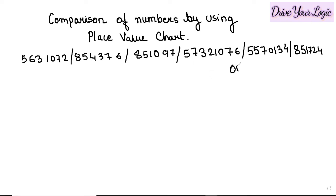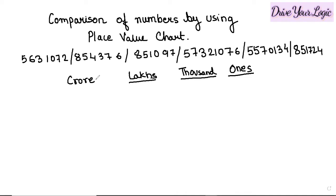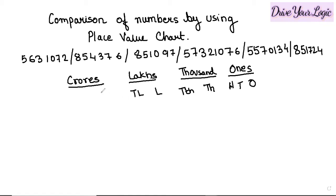To make the chart, first write down the ones place, then comes the thousands place, then comes the lakhs place, and then comes crore. Under these headings you write: ones, tens, hundreds, then TH (thousands), PTH (ten thousands), lakh, ten lakh, and crore.